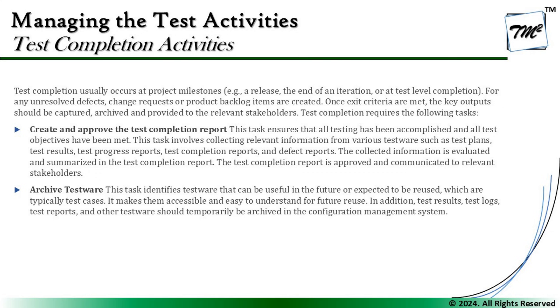Let's check out what the major activities are. Number one: test completion usually occurs at project milestones. For any unresolved defects, change requests, or product backlog items, documentation is created to capture them. Once exit criteria are met, the key outputs should be captured, achieved, and provided to the relevant stakeholders. The test completion requires the following tasks, and the very first one is to create and approve the test completion report.